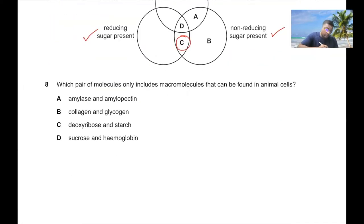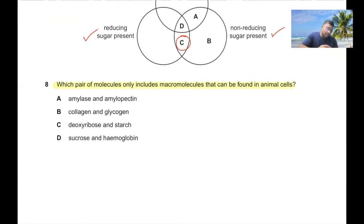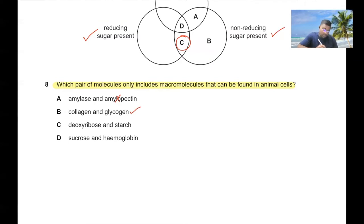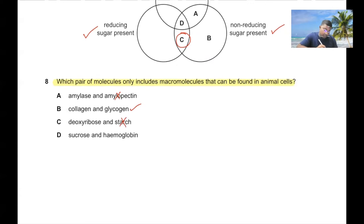Question 8: Which pair of molecules only includes macromolecules found in animal cells? Animal cells cannot contain amylopectin or amylase. We can find collagen and glycogen. We do not find starch, nor sucrose in animal cells. So 8B.